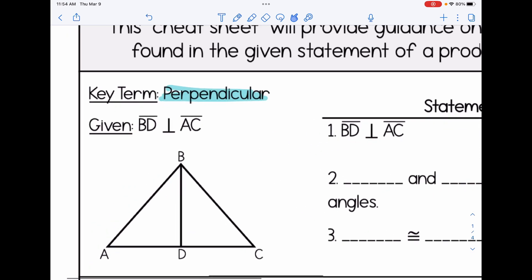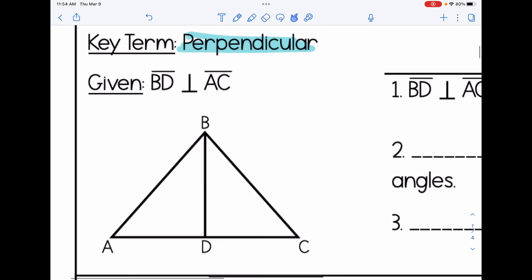This problem tells us the given statement that BD is perpendicular to AC. So when we read the given statements of a proof, we want to think about what does that tell us? I know perpendicular lines form right angles, and I'm going to go in my picture and mark off where those right angles are. So I know that angle BDA and BDC are right angles because perpendicular lines form right angles.